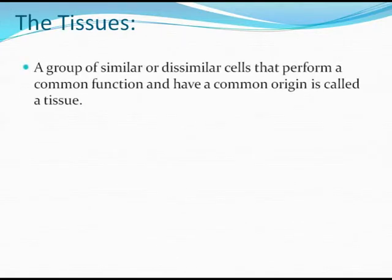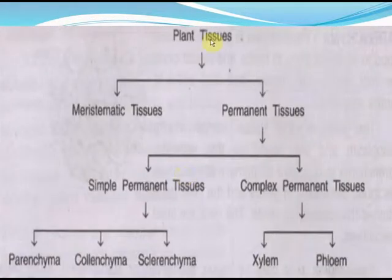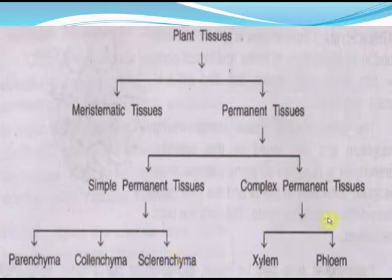Tissues are a group of similar or dissimilar cells that perform a common function and have a common origin. Tissues are classified into two main groups: meristematic tissue and permanent tissue. Permanent tissue is further divided into simple permanent tissues and complex permanent tissues. Simple permanent tissues include parenchyma, colenchyma, and sclerenchyma, while complex permanent tissues are the xylem and the phloem.